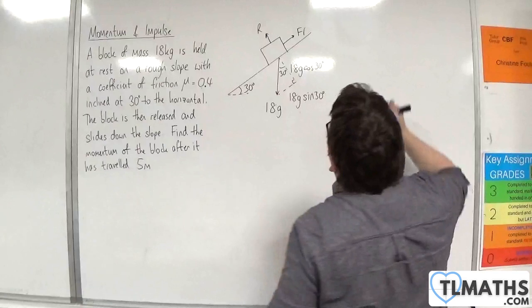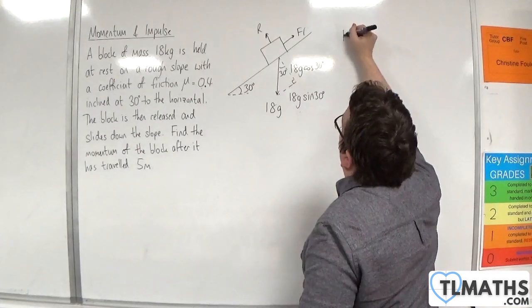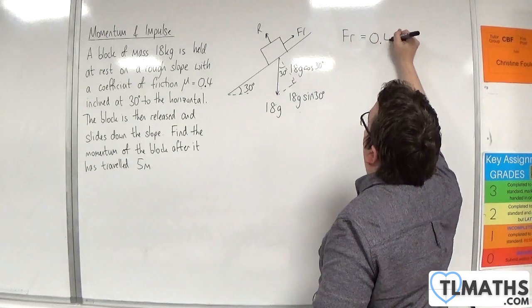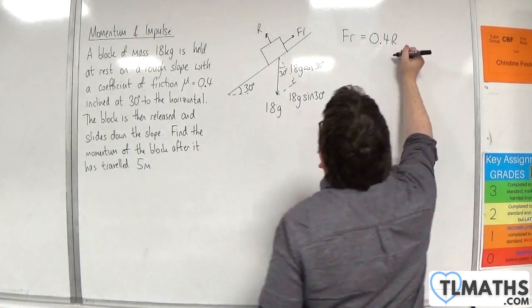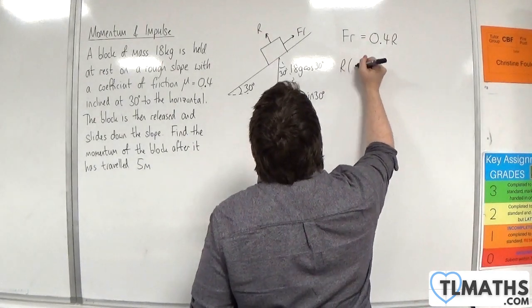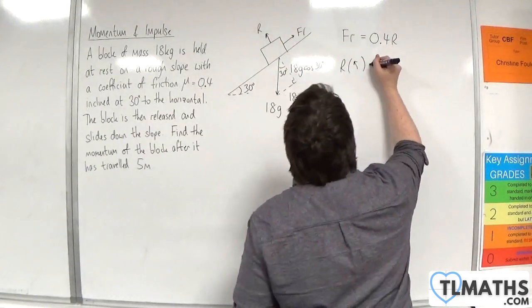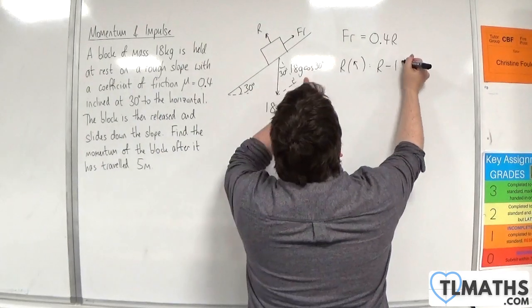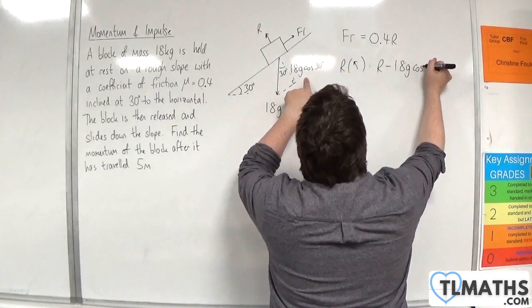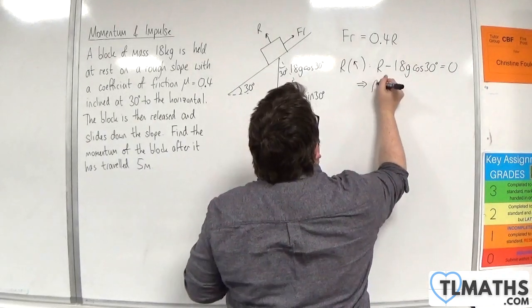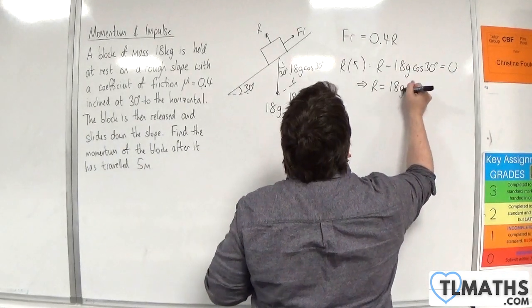Now we know that the block is moving, so the friction is equal to mu times R, so 0.4 times R. We're going to resolve perpendicular to the slope, taking that direction as positive. So we have R take away 18g cos 30 equals 0. So R is 18g cos 30.